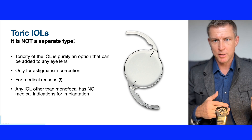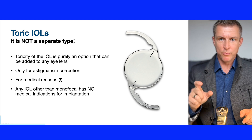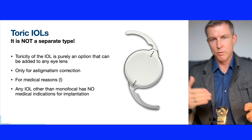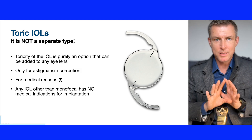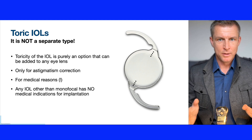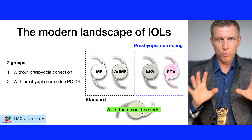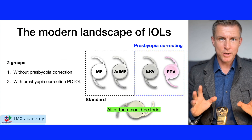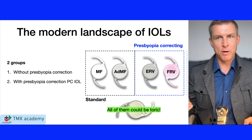Historically, when the toric IOL was invented, we only had monofocal lenses, which is why it was defined as a separate class. Today all four major IOL types have either a standard or toric version to correct pre-existing corneal astigmatism. A patient can select one of the four major IOL types, and whether it should be toric is decided by the surgeon. To summarize: four IOL types divided into two major groups — standard lenses and presbyopia-correcting lenses — and a toric option if you have more than one diopter of astigmatism.